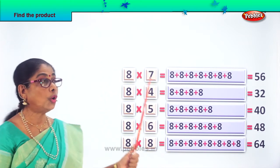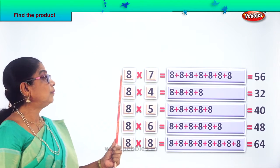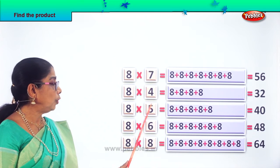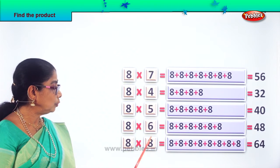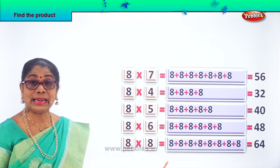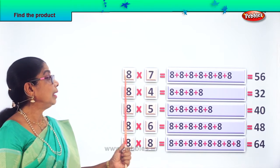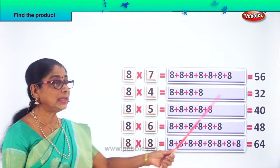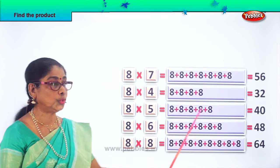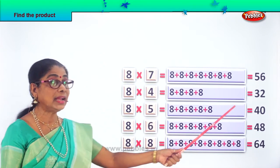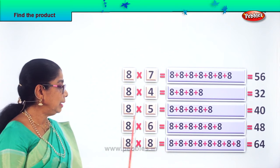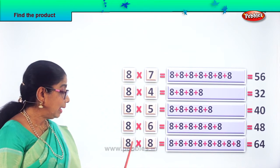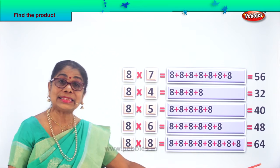Let's look at all the sums — finding the product of 8 into 7, 8 into 4, 8 into 5, 8 into 6, 8 into 8 using repeated addition. 8 sevens are 56, 8 fours are 32, 8 fives are 40, 8 sixes are 48, 8 eights are 64.